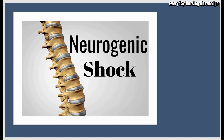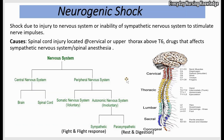Welcome to Everyday Nursing Knowledge Lectures. Today we will learn about neurogenic shock. Shock means decreased tissue perfusion that leads to hypoxia — decreased blood supply to the tissues leading to low oxygen. When shock happens due to injury to the nervous system, it is called neurogenic shock.